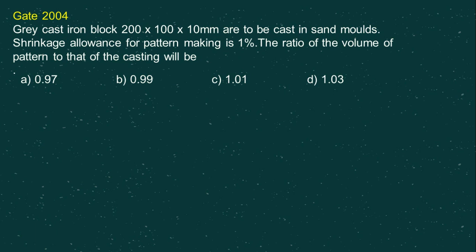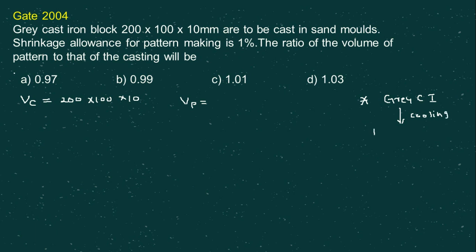Let's find the volume of the casting and the volume of the pattern. The volume of the casting, VC, is equal to 200 × 100 × 10. For the volume of the pattern, we must consider the shrinkage allowance. The important point here is that the material is gray cast iron, which on cooling, instead of shrinking like all other metals, actually expands.